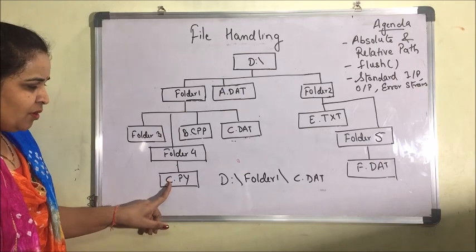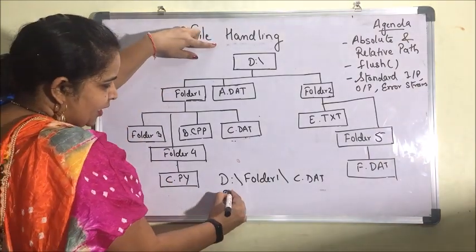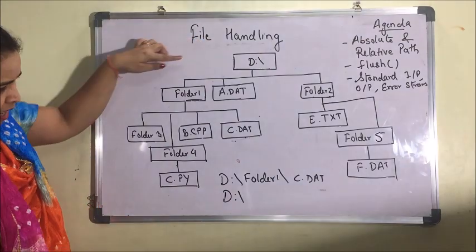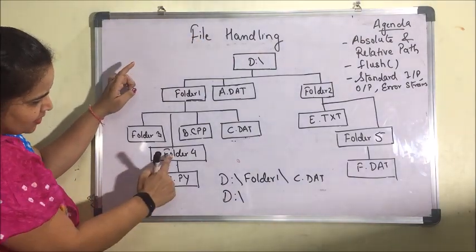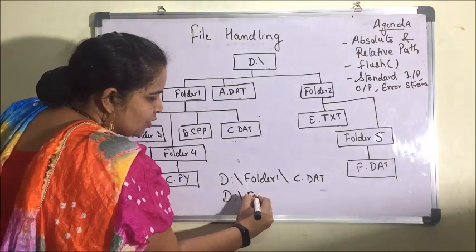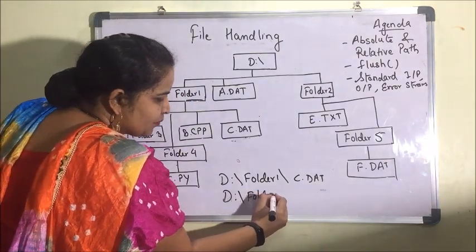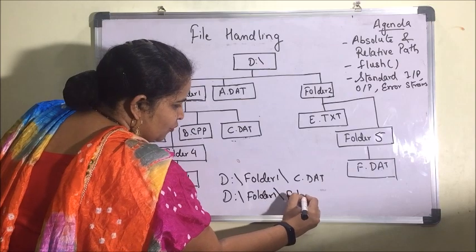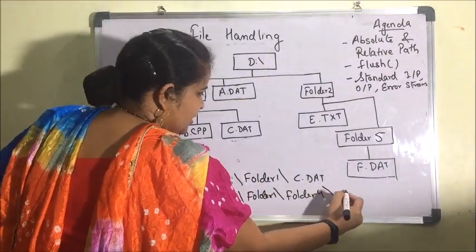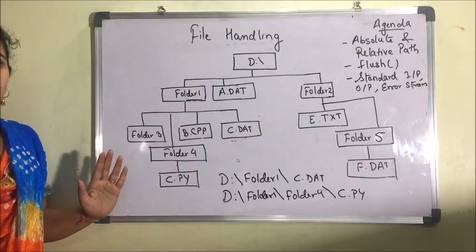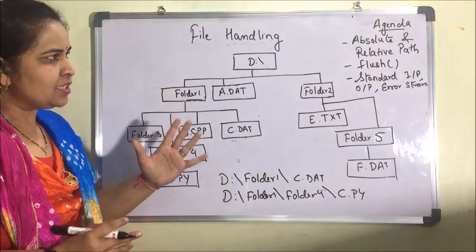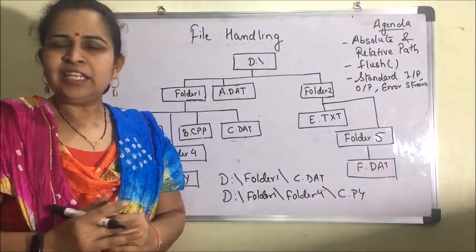Suppose you want to access c.py. The path again starts from the root: D drive, then you can see it is in folder four which is inside folder one, so you write folder one, backslash, folder four, backslash, c.py. In this way we write absolute path.